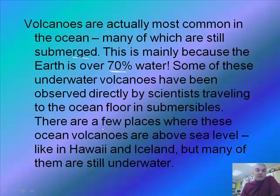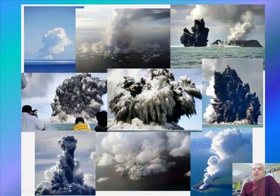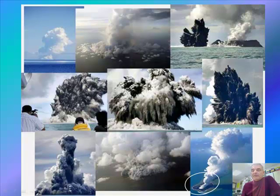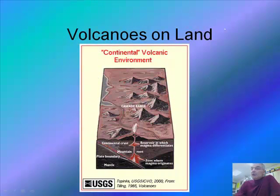There are a few places where these ocean volcanoes get above sea level, notably Hawaii and Iceland, but many of them are still underwater. Here are some pictures of some volcanoes underwater — this is them erupting above the surface of the water, and this is one right down here where it's made an island. We can see the formation of an island right here.